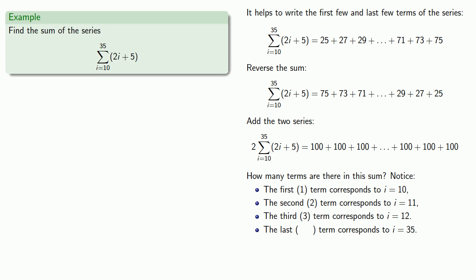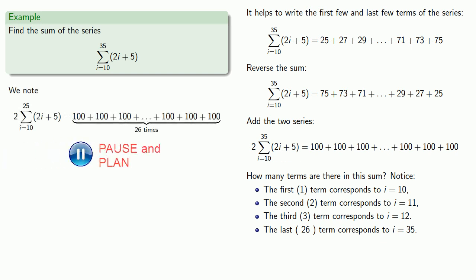And so this last term must be the 26th term. And so what we have is we have 100 added together 26 times. And so twice our series sum is 26 times 100. And so our series sum itself will be half this amount.